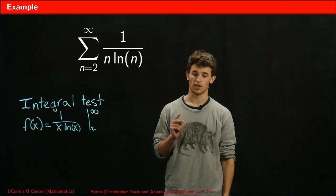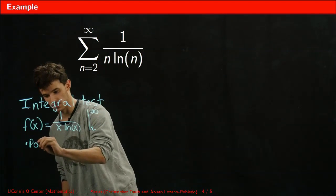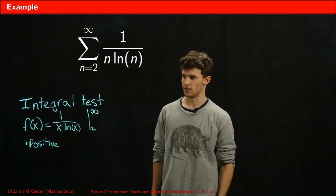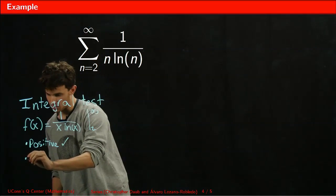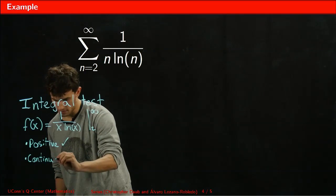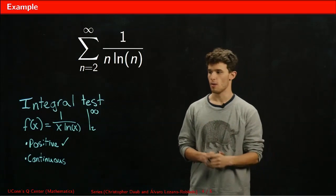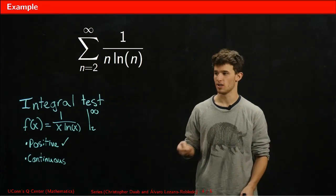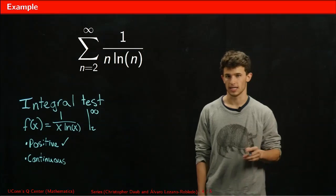Now to perform the integral test, we have three criteria that must be met. It has to be positive, which 1 over x ln(x) is because there are no negative terms. It has to be continuous, which is a little trickier. Normally 1 over x ln(x) might give us problems if we start at 0 or 1 because then we get division by 0. However, since we're starting at 2 and going to infinity, 1 over x ln(x) is continuous.